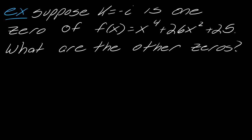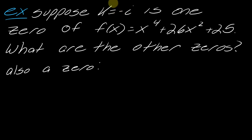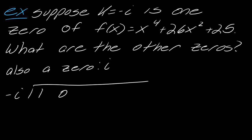Suppose k = negative i is one zero of f(x) = x⁴ + 26x² + 25. What are the other zeros? Since all coefficients are real, the conjugate zeros theorem gives us i as another zero for free. You can think of negative i as 0 minus i, so its conjugate is 0 plus i = i. Now set up synthetic division using negative i.